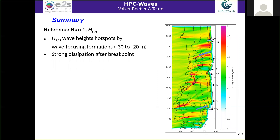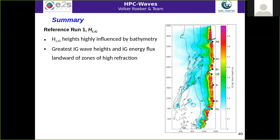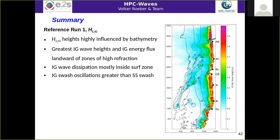In summary for reference run one at mean sea level, we found that swell wave energy hotspots occur at underwater rock formations and zones of high refraction, such as the sediment depot near the Adour river mouth and other features where refraction is dominant. For infragravity waves, the bathymetry also has a high influence on concentrating them. The greatest infragravity wave heights and IG energy fluxes are landward of the zones of high refraction. Dissipation of infragravity waves mostly happens within the surf zone together with gravity waves, and infragravity swash oscillations far dominate the swell wave oscillations in the swash zone.